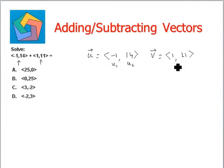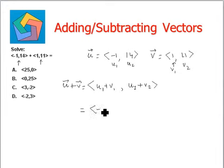So this is our v1 and this is v2. So vector u plus vector v is given by u1 plus v1 comma u2 plus v2. u1 is negative 1 plus 1 comma u2 is 14 plus 11.